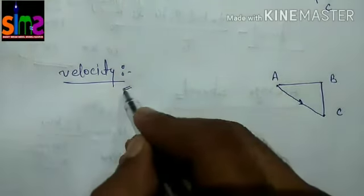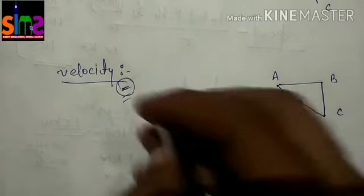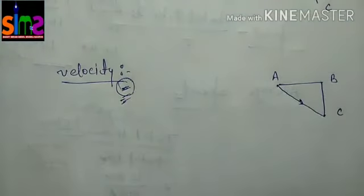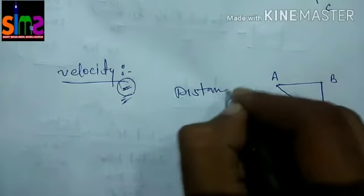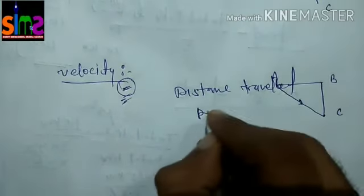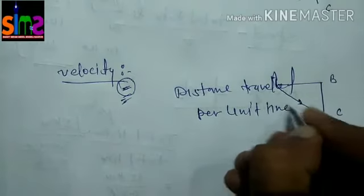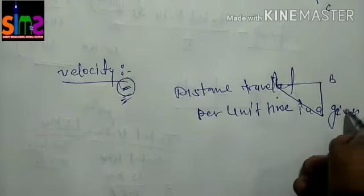Similarly, we define velocity. It is the ratio of distance travelled per unit time. So if we add direction, we define velocity as distance travelled per unit time in a given direction.